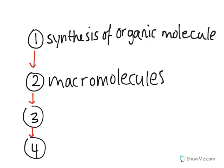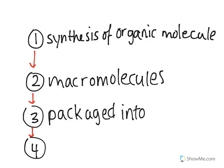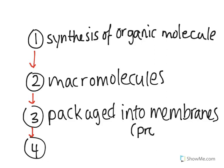After these macromolecules were formed, the third step began when these macromolecules started being packaged into membranes. These were known as the simplest, earliest cells. They weren't like the cells we have today, which is why they were given another name: protobionts. These were all of those macromolecules packed into a membrane.